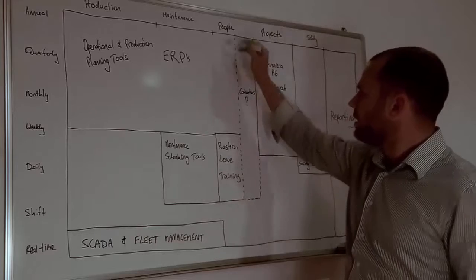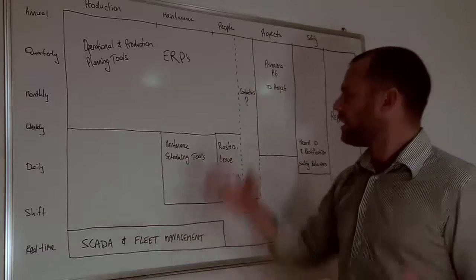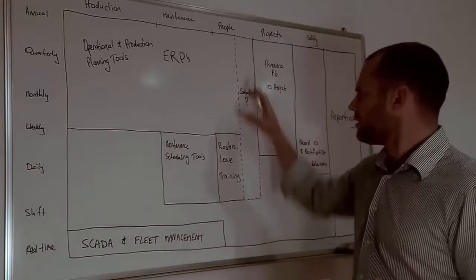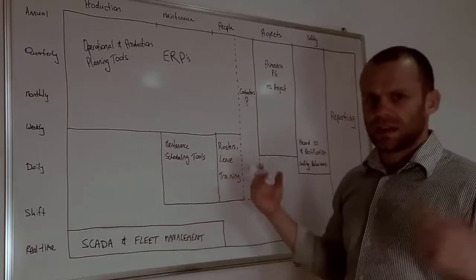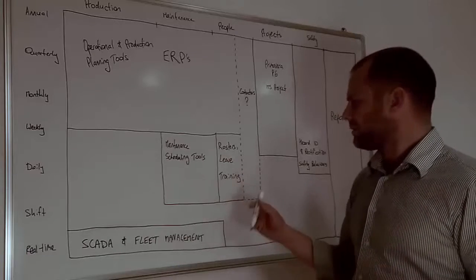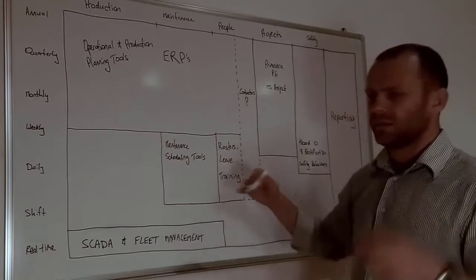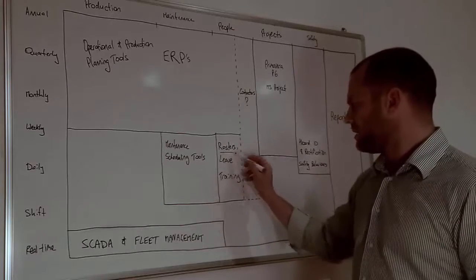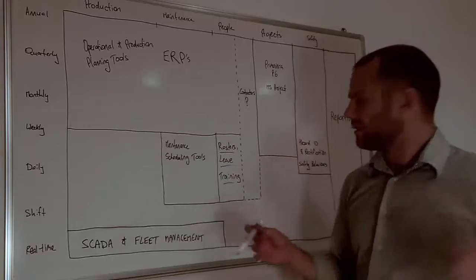When you come to people, you tend to find that ERPs contain all of the employees but not all of the contractors. So the contractors, although they work on the site, are seldom inside the ERP and so they're not really included in the plan except from a cost line basis. And you almost always find that rosters, leave, training, etc. are done in spreadsheets outside of the tool.